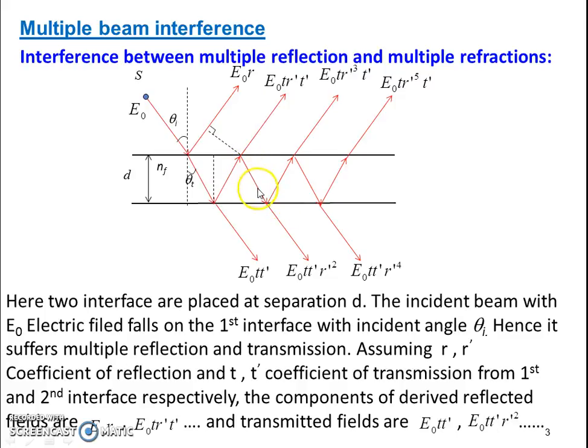Again, this reflected beam will suffer both transmissions and reflections. This is the path of the reflections and this is the path of the transmissions. This is how the multiple transmissions or multiple reflections occur when the light gets trapped in between two interfaces.